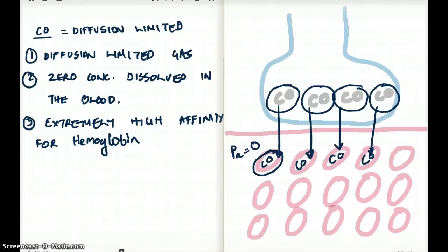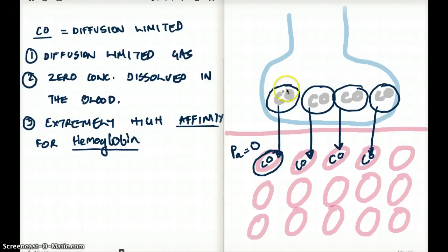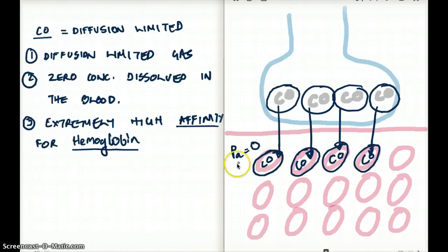Let's talk about carbon monoxide being diffusion-limited. What does that really mean? It means that carbon monoxide has a very, very high affinity for hemoglobin. So once it binds to hemoglobin, it does not let go. So let's say we have four molecules of carbon monoxide in the alveolus — they're going to bind to four RBCs very, very tightly. The partial pressure of carbon monoxide in the plasma is zero, because it goes and binds to the RBC and does not dissolve in the plasma.